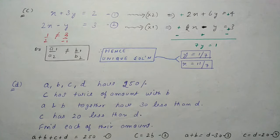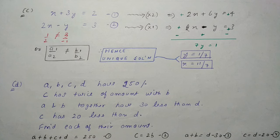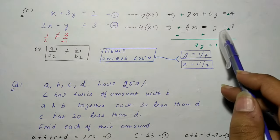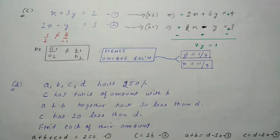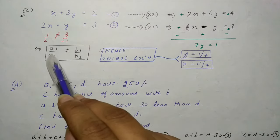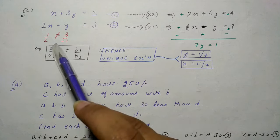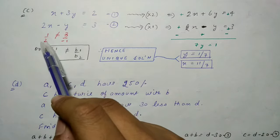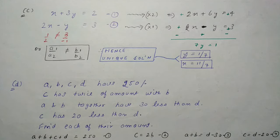C part: x + 3y = 2 और 2x - y = 3। Elimination लगाने पर - पहली equation को 2 से multiply करके 2x + 6y = 4, दूसरी 2x - y = 3। Solve करने पर y = 1/7 और x = 11/7 आता है - एक unique solution। Verify: a₁/a₂ = 1/2, b₁/b₂ = 3/(-1), और 1/2 ≠ 3/(-1), therefore unique solution।